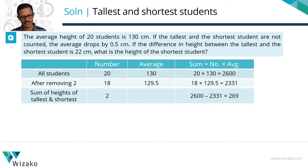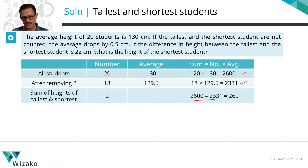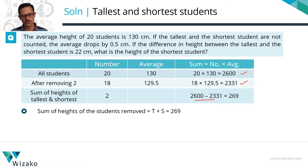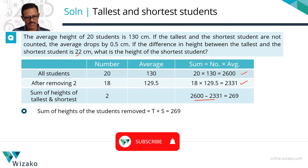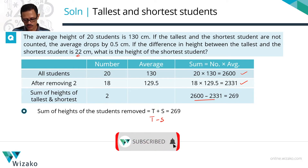Let us capture this in printed form. The sum of the heights of all 20 is 2600. The sum of the heights of 18 out of the 20, when the average drops by 0.5, is 2331. The difference between these two numbers will be the combined height of the two students — the shortest and the tallest. So let tallest height be t and shortest height be s: t plus s equals 269. The question mentions the difference in their heights is 22, so tallest minus shortest equals 22.